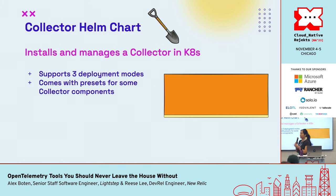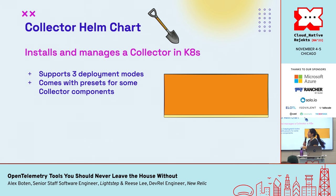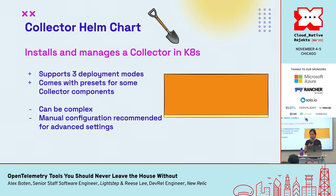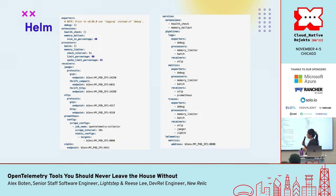Because many collector components require special setup and permissions to access the Kubernetes API server, the Helm Chart comes with some handy presets to help configure those more easily. However, Helm Chart can be complex, and the presets are recommended as a starting point — if you need more advanced configuration, it's recommended to do that manually. This is the default config file for the collector that comes with the Helm Chart, and you can update these settings by changing the values.yml file.